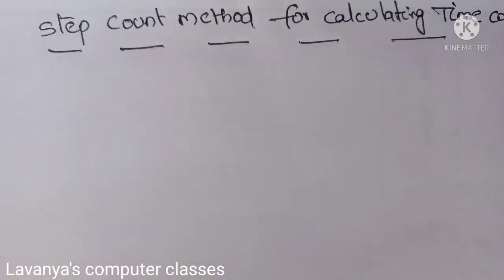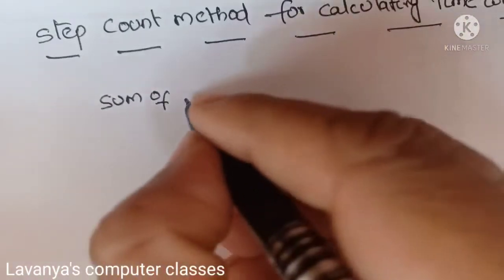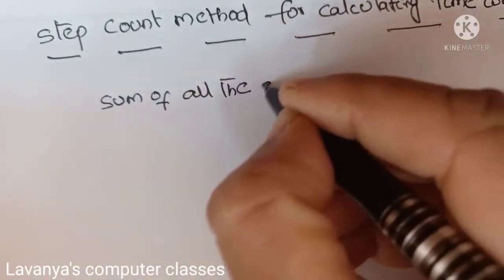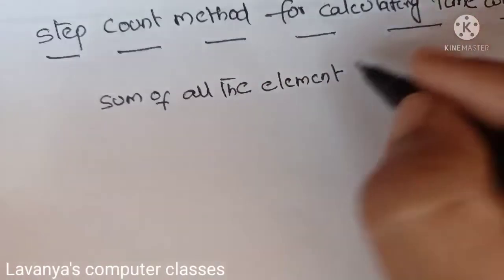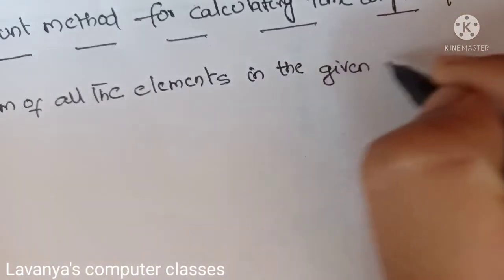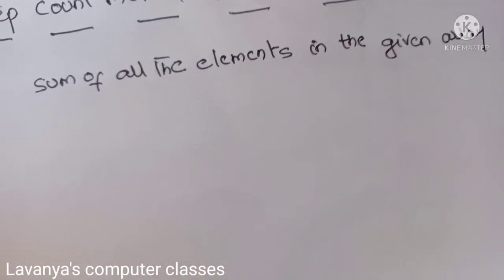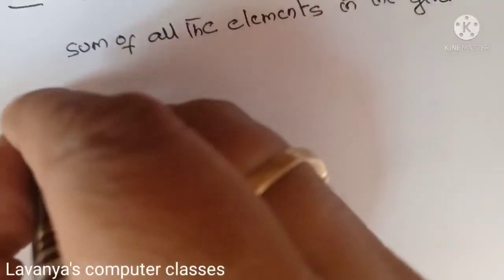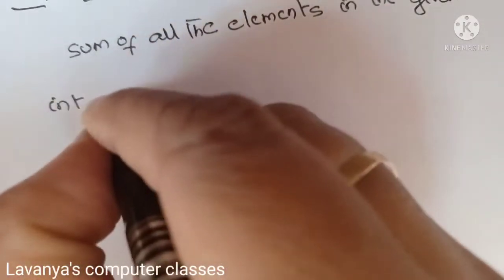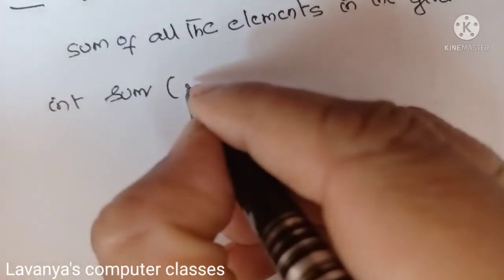I will explain the step count method with an example. I want to calculate the sum of all the elements in a given array. For this program I will first write the algorithm, and then find the time complexity. The function name is 'sum'.